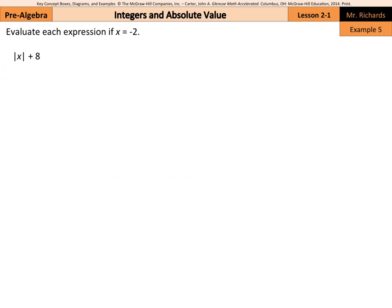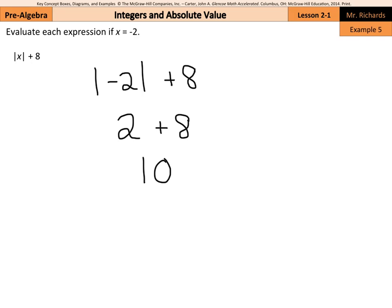Next, we're asked to evaluate each expression if x equals negative two. We substitute negative two for x: the absolute value of negative two plus eight. The absolute value of negative two is positive two, plus eight is ten. And that is it for this lesson — chapter two, section one on integers and absolute value. Good luck!